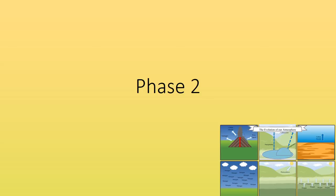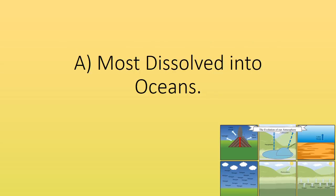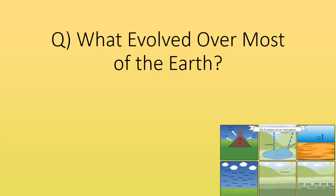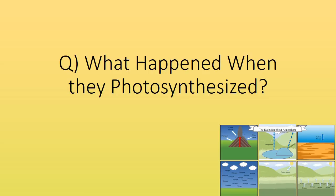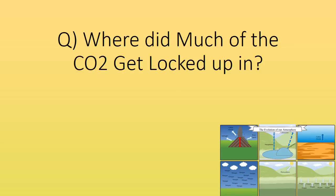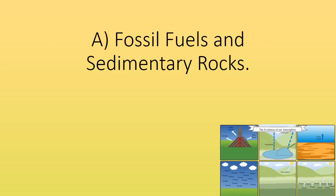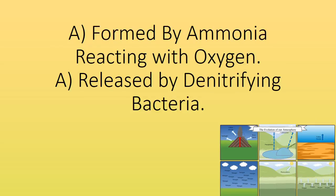Phase two. What happened to the CO2? Most dissolved into the oceans. What evolved over most of the Earth? Green plants. They replaced CO2 with O2. Where did much of the CO2 get locked up? In fossil fuels and sedimentary rocks. How was nitrogen gas put into the atmosphere? Formed by ammonia reacting with oxygen, and released by denitrifying bacteria.